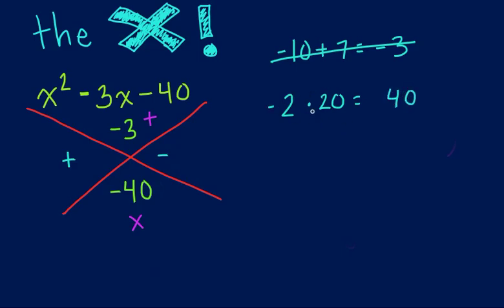So, let's see. What if I did negative 2 times 20? That would give me a negative 40, but remember, it has to add to negative 3 as well. So what if I did negative 2 plus 20? Because they have to be the same numbers. That's the trick to this. And that would give me a positive 18. So that doesn't work.